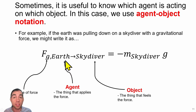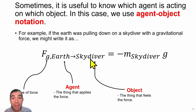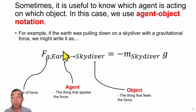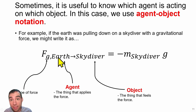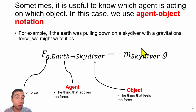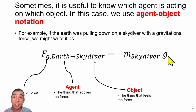In this case the agent is the earth, because the earth pulls down with gravity, and then we label our system as the object — the thing that feels the force. So here we have a force of gravity applied by the earth on the skydiver, and that force equals negative mg: the mass times the acceleration due to gravity.